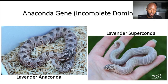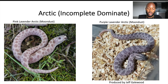Now let's get into the second incomplete dominant gene, which is the arctic. The arctic is kind of interesting with the lavender because some of the key characteristics of the arctic, in my opinion, don't always pop up. These two snakes were produced by the same person — Jeff Galwood from JMG Reptiles, probably the most popular hog nose breeder and the one who discovered the arctic gene. He has two different types of arctic lavender hog nose snakes.